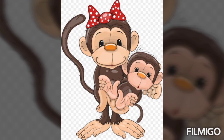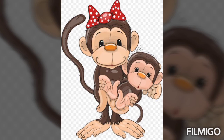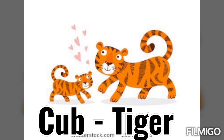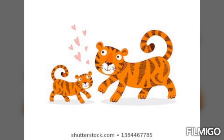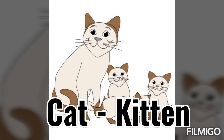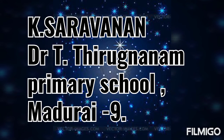What is the young one of monkey? The young one of monkey is an infant. What is the young one of tiger? The young one of tiger is cub. What is the young one of cat? The young one of cat is kitten. Thank you.